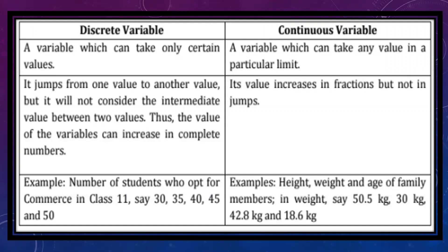In fractions, a discrete variable will have whole numbers — for example, 30 or 35. Whereas the opposite case is a continuous variable, which can take any value within a particular limit. It increases in fractions and we can give the value in decimals. Examples of continuous variables include height, weight, and age of family members.